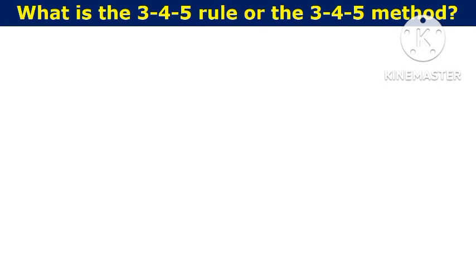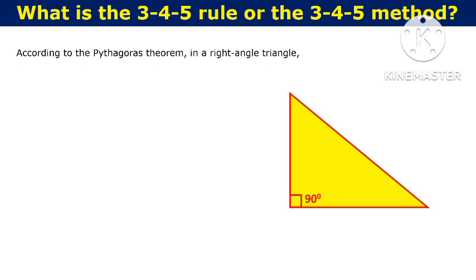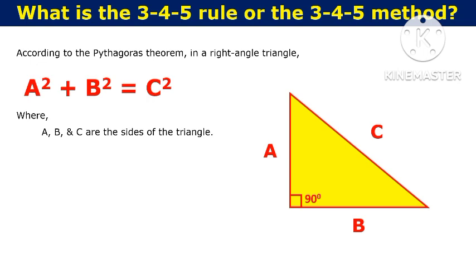What is the 3-4-5 rule or 3-4-5 method? According to the Pythagorean theorem, in a right-angled triangle, A² + B² = C², where A, B, and C are the sides of the triangle. Also note that C is the hypotenuse of the triangle.